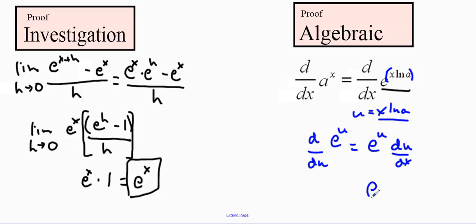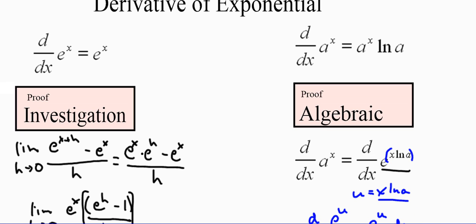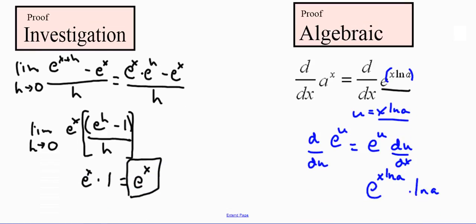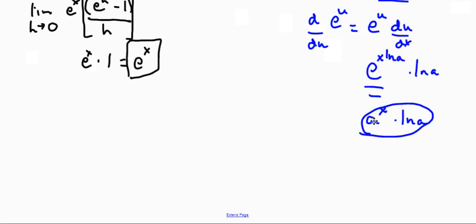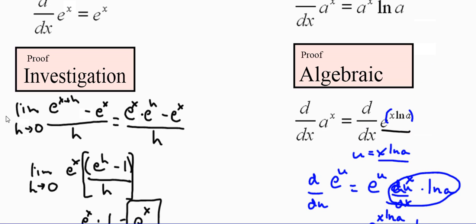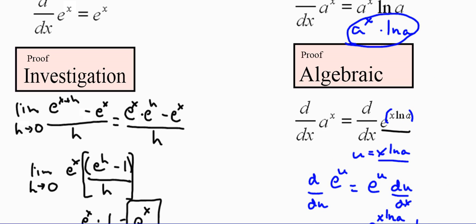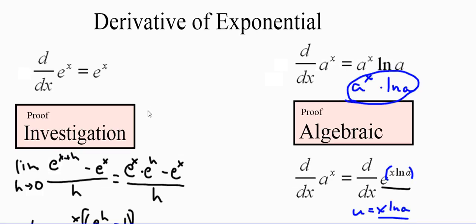So we have e to the u, substituting back in as e to the x natural log of a, times the derivative of x natural log of a with respect to x, which is simply natural log of a. And we verified earlier that e to the x natural log of a is the same as a to the x. So the final result is a to the x times natural log of a. The derivative of a to the x equals a to the x natural log of a.